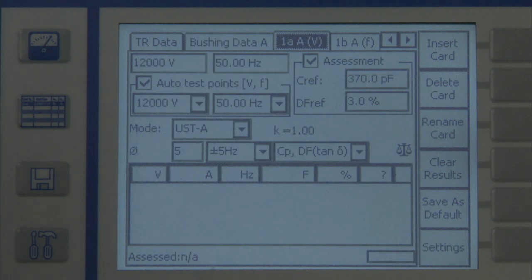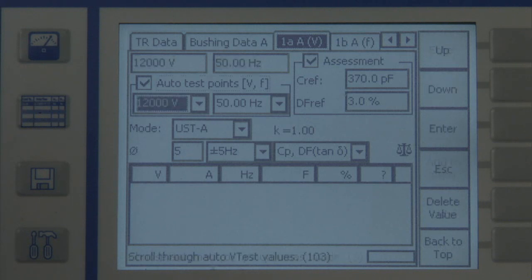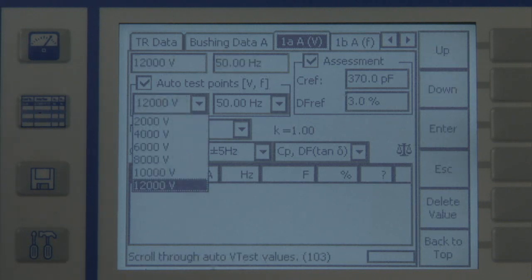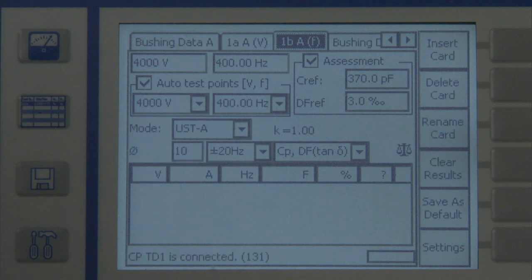The second test card for the bushing of phase A contains the data for the voltage-dependent measurement, in which the dissipation factor or the power factor shall be measured at 2, 4, 6, 8, 10 and 12 kV at power system frequency. The third card includes the previously prepared frequency-dependent measurement.